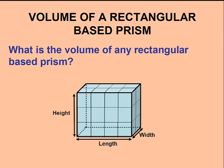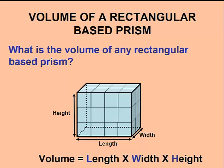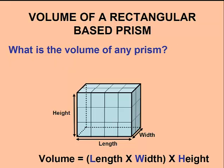We could find the volume of any rectangular base prism by simply multiplying the three dimensions together. Volume would equal length times width times height. We could further generalize this formula by thinking of length times width as being the area of the base of our rectangular prism. This formula would work for any prism.